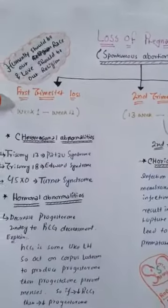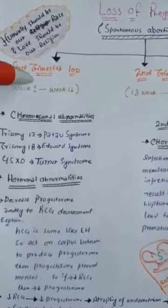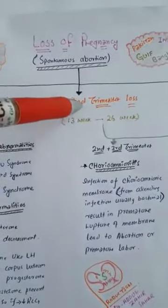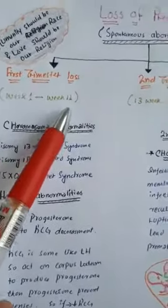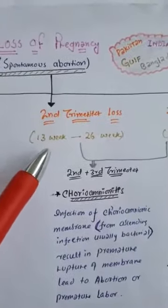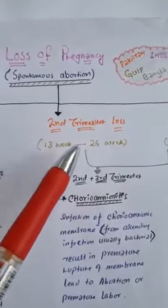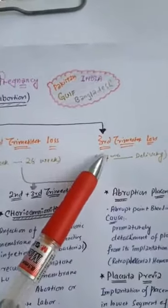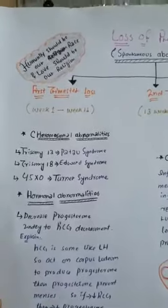We divide pregnancy into three trimesters. The first trimester is up to 12 weeks. The second trimester is from 13 weeks to 26 weeks — just remember 13 multiplied by 2 equals 26. The third trimester is from 27 weeks up to delivery.